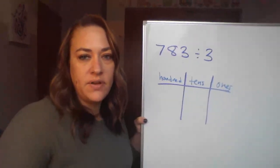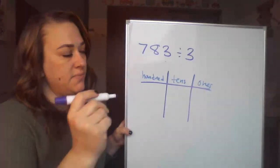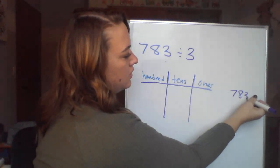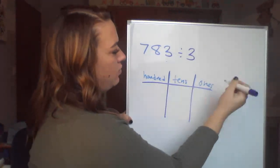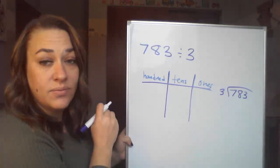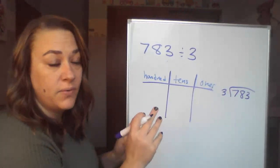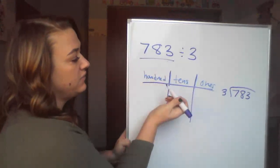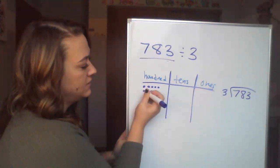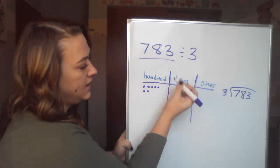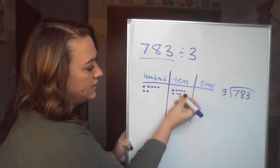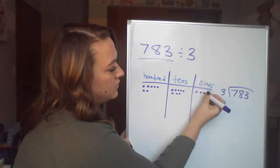Let's do another one together. We have 783 divided by 3. And over here on the side for this one, I'm going to kind of walk us through at the same time with the standard algorithm. So if I have 783, I first need to represent that here. So I need 7 hundreds, I have eight tens, and three ones.